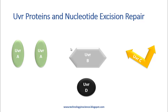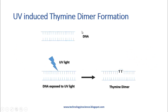We are considering the example of thymine dimer removal in bacteria E. coli. The four proteins are UVRA, UVRB, UVRC, and UVRD. Each of these proteins has its own function. Let's see how the nucleotide excision repair mechanism works when DNA is exposed to UV light, which causes lesions such as thymine dimer formation.